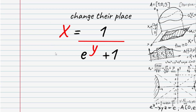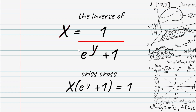Solve for y as a normal fraction. We have x equals 1 over e to the power of y plus 1. The denominator is e to the power of y plus 1, so x times (e to the power of y plus 1) equals 1.